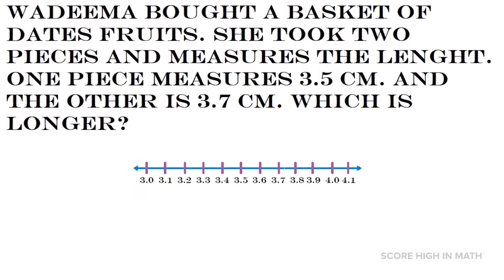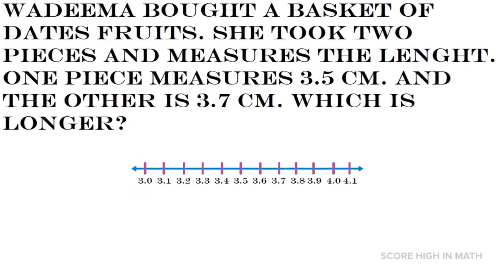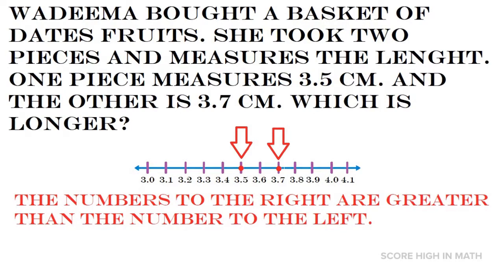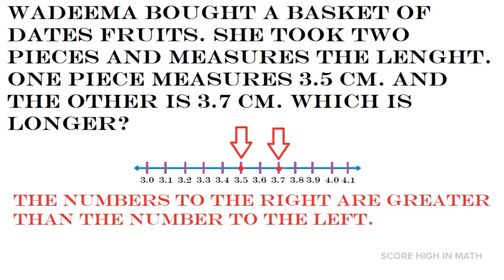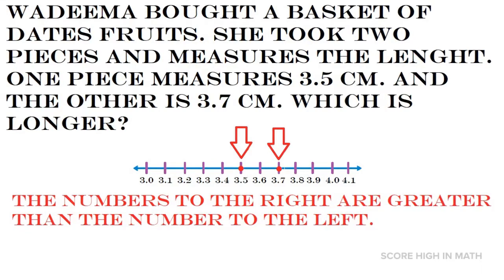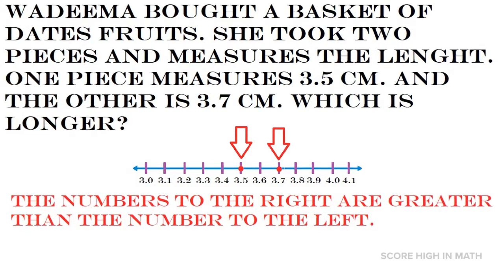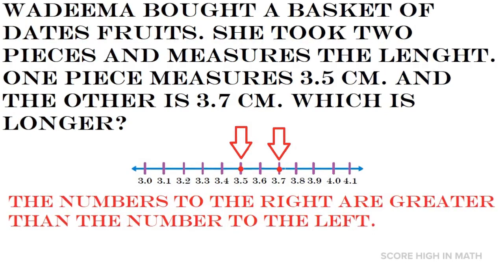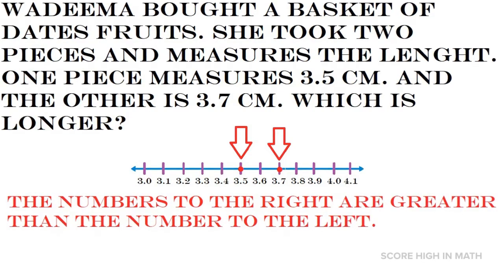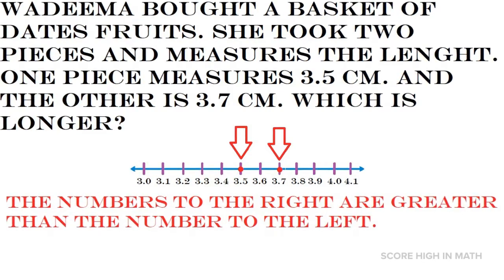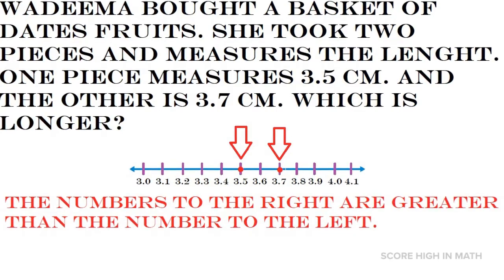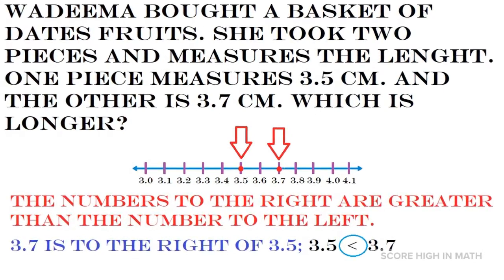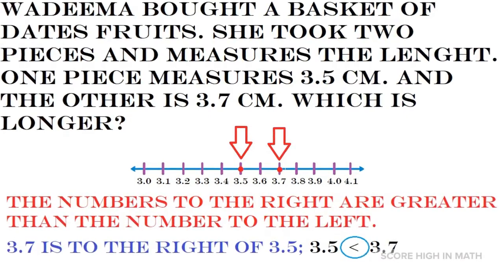Let us choose the number line strategy. We are going to plot the measurements of the dates fruits on it — one measures 3.5 and the other measures 3.7. Remember that numbers going to the right are greater than numbers going to the left. Since 3.7 is to the right of 3.5, therefore 3.5 is less than 3.7.